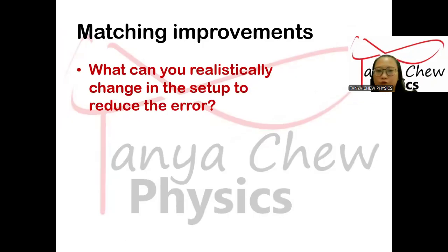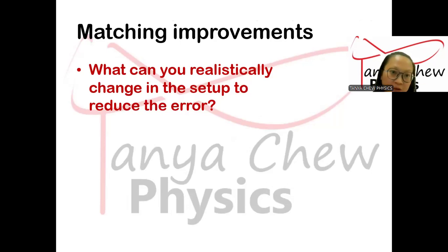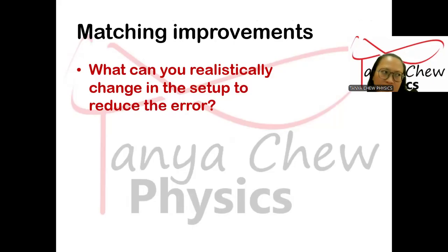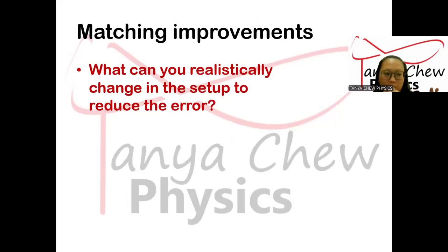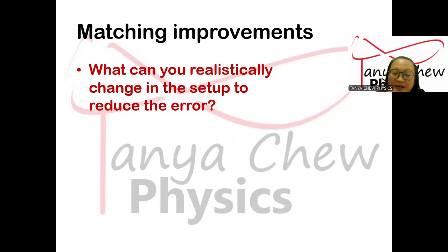And whenever you have listed out your limitations, make sure that you have matching improvements. So what are improvements? Improvements are what you can realistically change in the setup to reduce the error. For example, if one limitation is using a meter rule to measure the thickness of the wire, causing increased percentage error, your improvement could be: use a micrometer to measure the diameter of the wire. That is what we call a matching improvement.